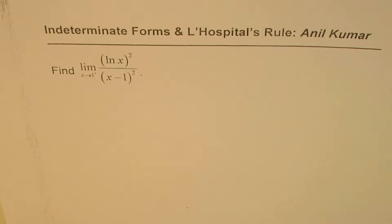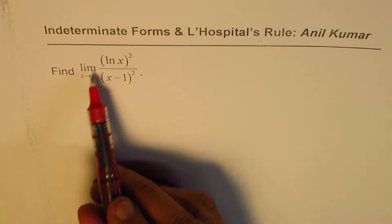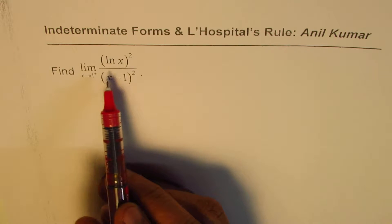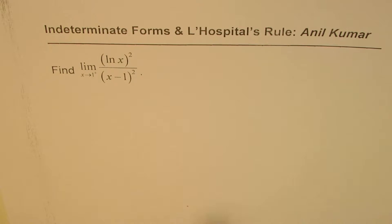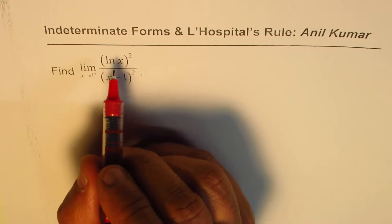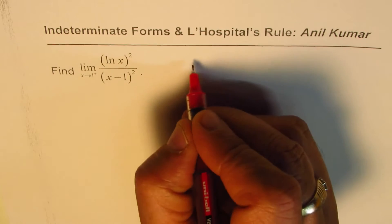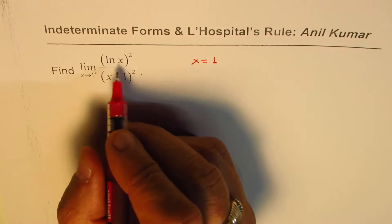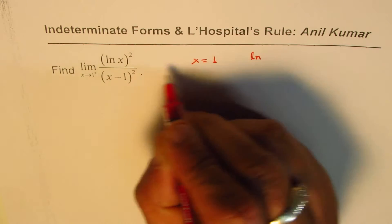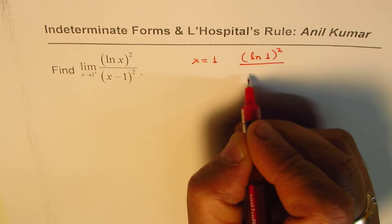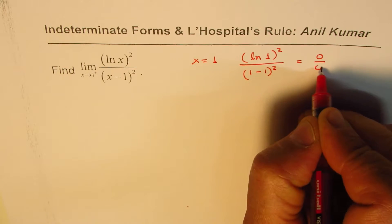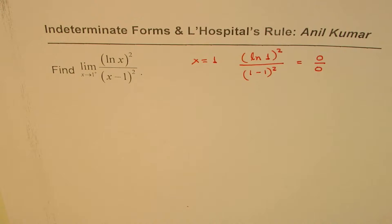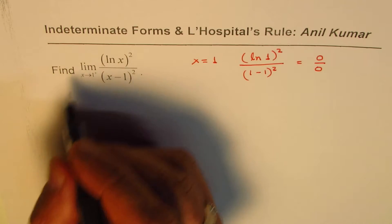I am Anil Kumar, sharing with you some examples where L'Hôpital's rule can be applied. The question here is to find the limit when x approaches 1 from the right side for the function (ln x)² divided by (x−1)². To begin, let us check whether it is indeed in indeterminate form. When we substitute x = 1, we get ln(1) = 0 in the numerator and (1−1)² = 0 in the denominator, so it is 0/0 indeterminate form, and we can apply L'Hôpital's rule.